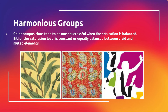As far as color goes, that usually refers to the saturation level being consistent or equally balanced between vivid and muted elements. In the leaf pattern example, the saturation level is pretty even across the entire swatch. Even though the colors are very different — light green and light yellow, dark green and dark yellow — the intensity is still consistent and fairly muted across the whole swatch.